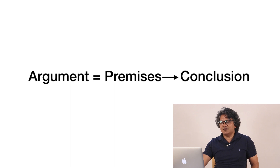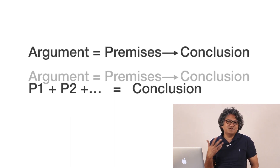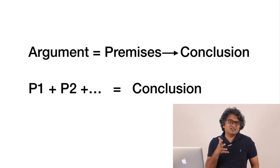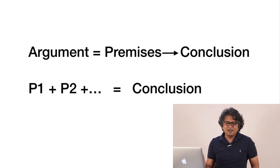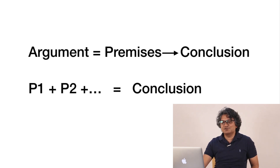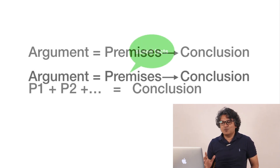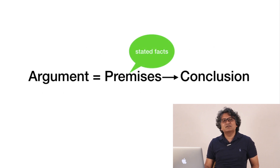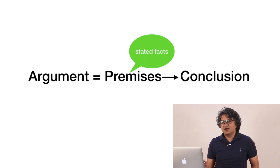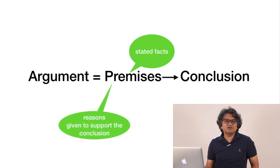Premises could be two or more. In syllogisms it is two, but in critical reasoning it could be anywhere from one to however many. You take the help of a few premises and reach a particular conclusion. A premise is nothing but stated facts — and the word 'stated' here is extremely important. Another way of defining a premise is: the reasons given to support the conclusion.